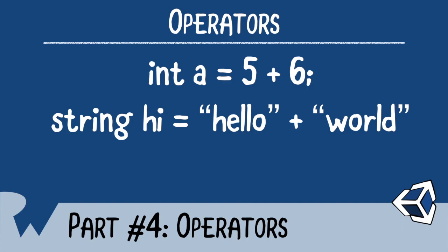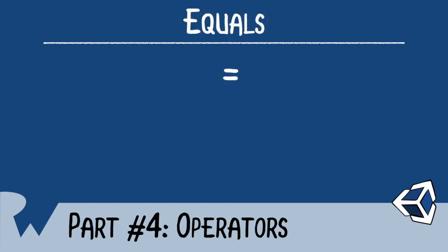The first operator is the equal sign. If you are coming from a math background, you would think that the equals denotes equality. This is not the case in C-Sharp. The equal sign performs an assignment. Take, for example, the following statement. Int x equals 1. Let's break this down.